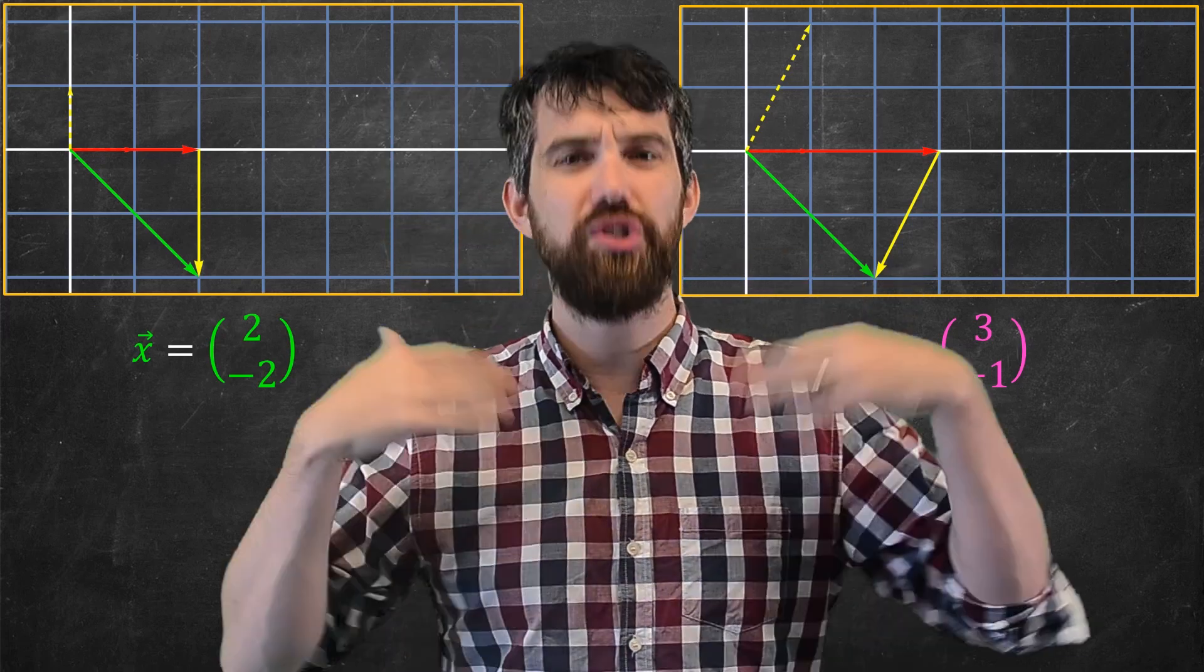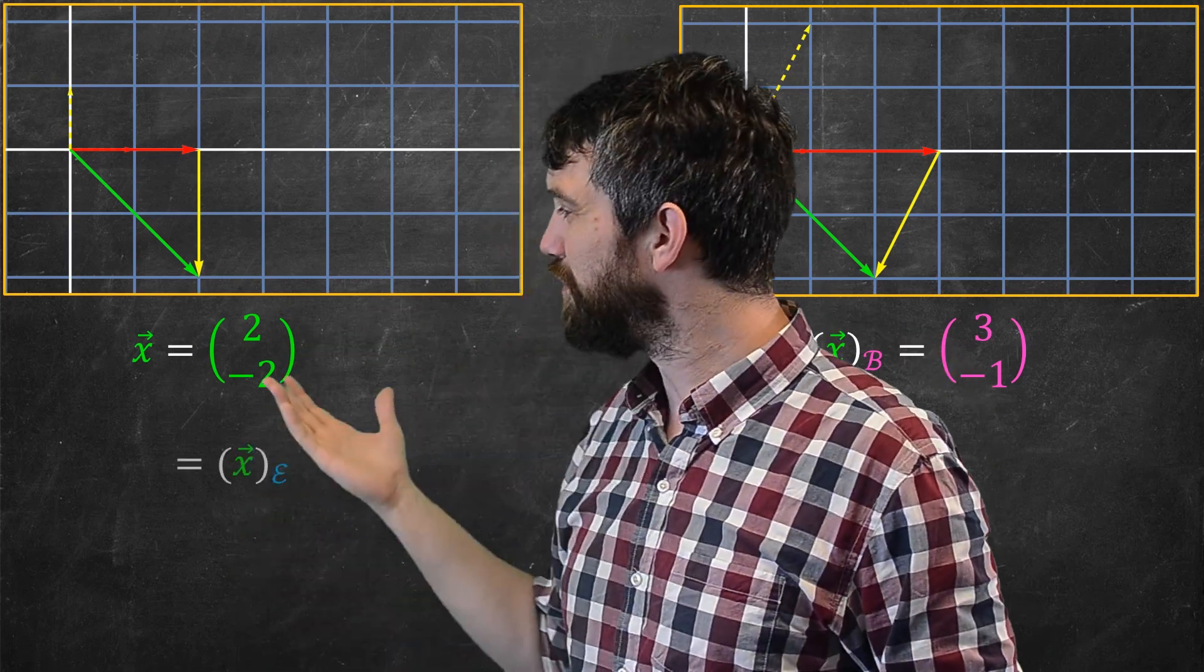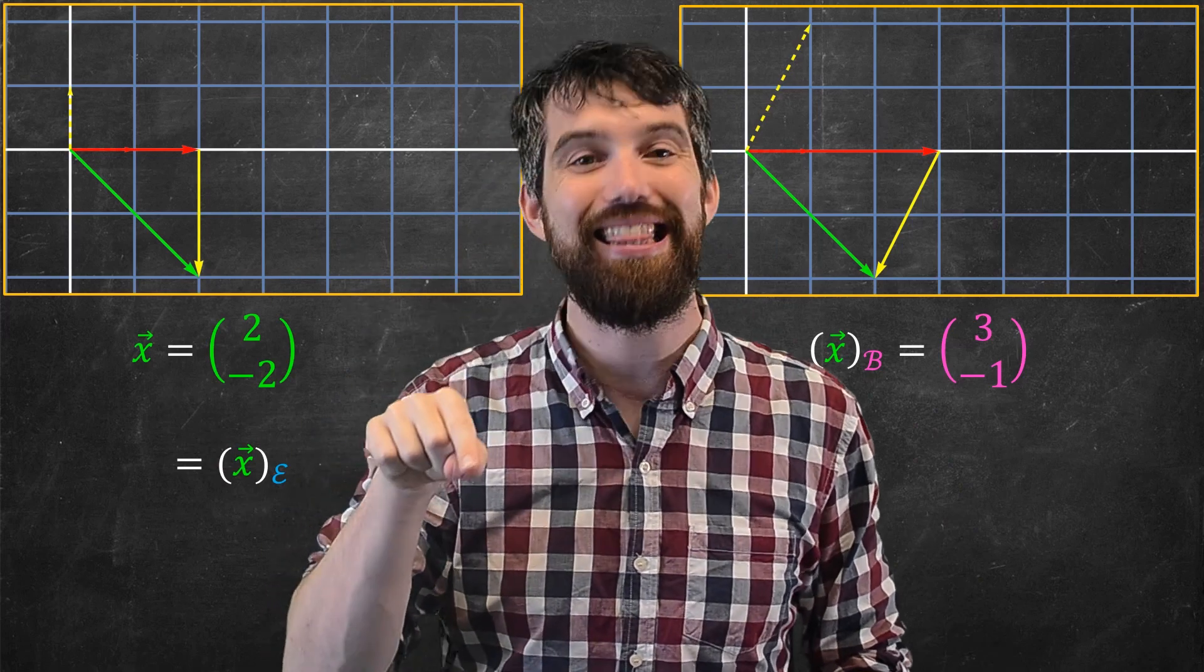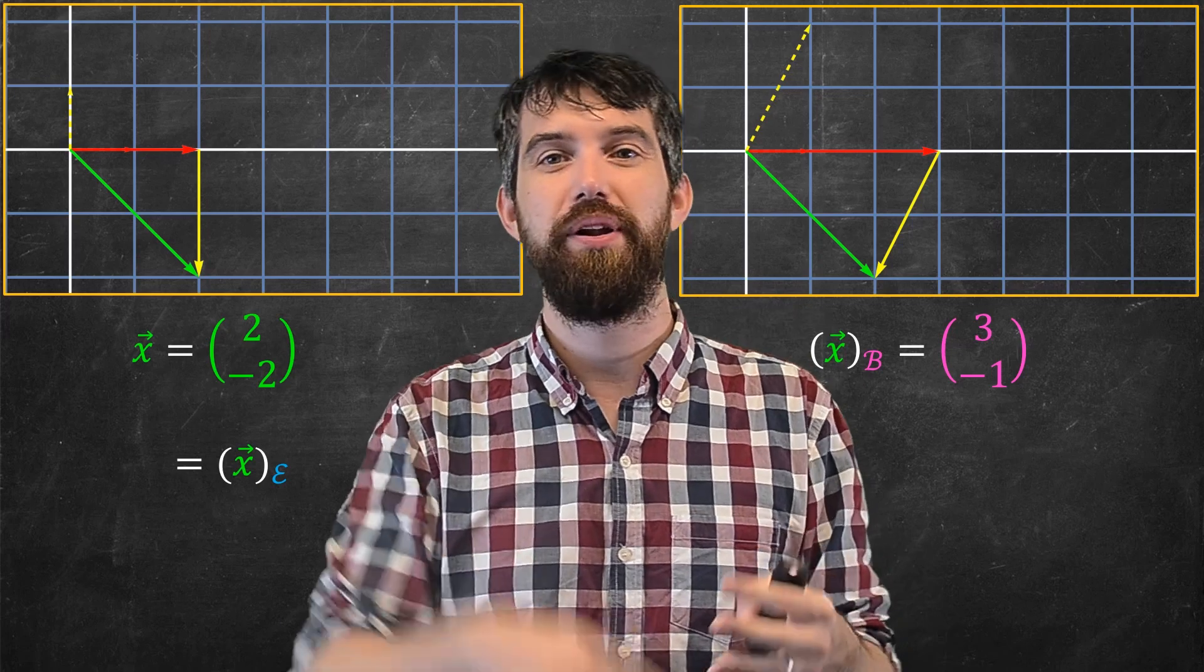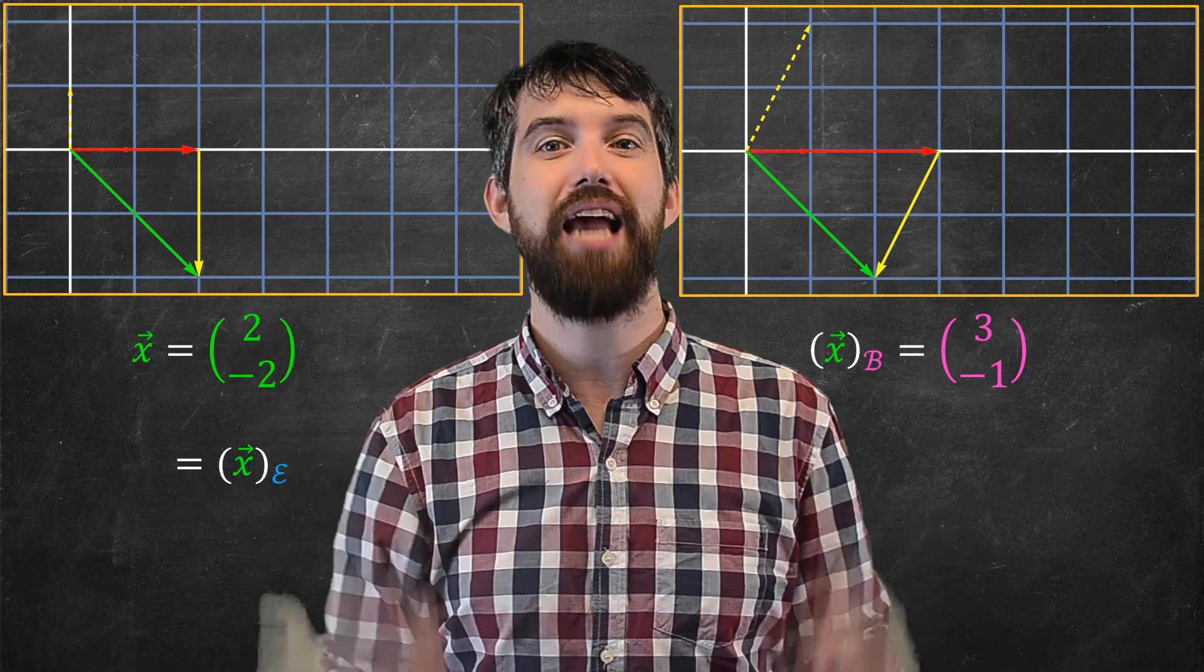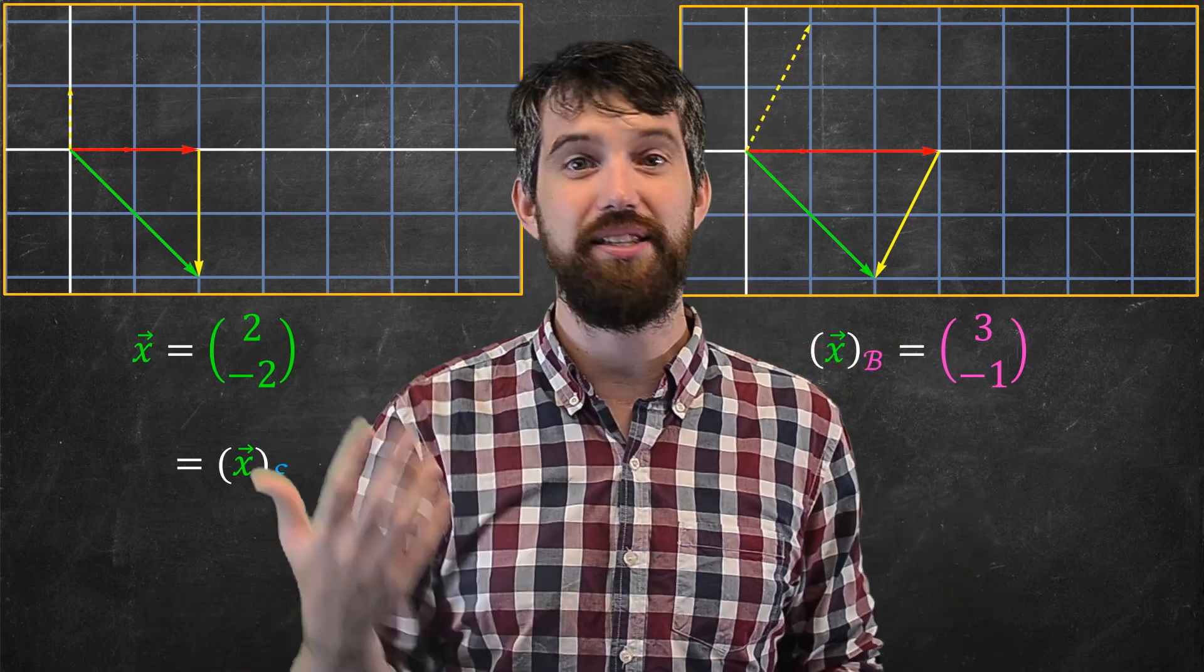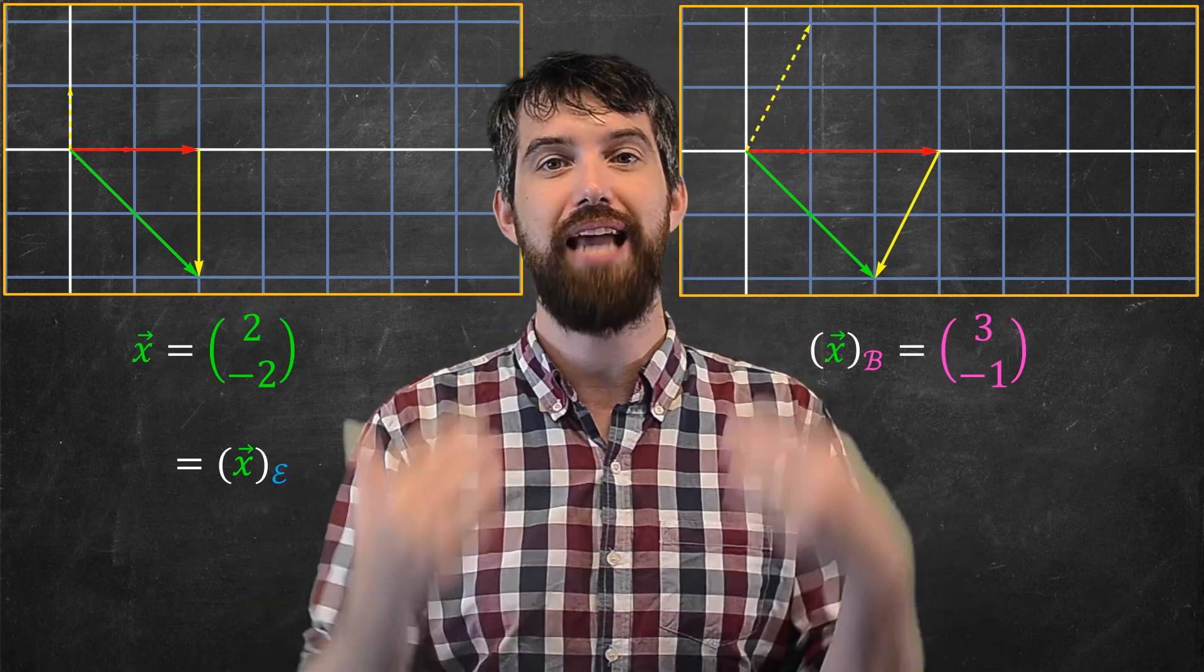One final thought. If I want to make super explicit that I'm talking about the standard basis, I could also refer to x, sub, and I put sort of a scripty e thing there. And the idea is that, you know how the standard basis is normally written as e1 and e2? So this fancy scripty e just denotes that we're in the standard basis. Often we just don't ever bother with this, but if you wanted to be consistent, have every vector always labeled what the basis was, that's how you could label it for the standard basis.